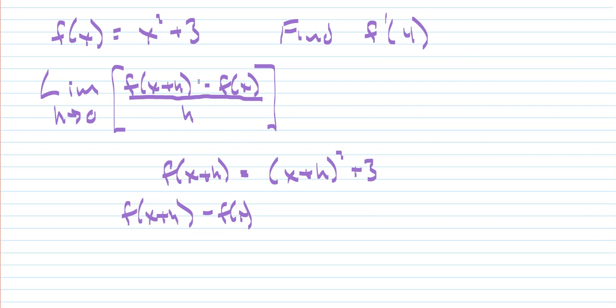That would give us the entire numerator. So that's going to look like this: f of x plus h squared plus 3, put that in brackets and subtract our function x squared plus 3.